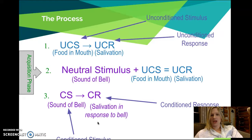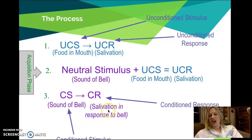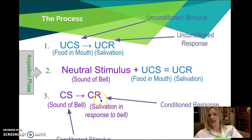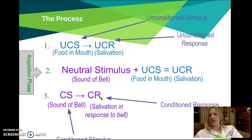A couple of things to keep in mind when working through your worksheet: the UCR and the CR are always going to be the same behavior. Whatever is the natural reaction to something else will become a learned reaction to the neutral stimulus you're introducing. Oftentimes it's easiest to start by identifying the CR, and you can backtrack from that to figure out what the UCR was. Whatever the CR is has to be something that at one time was elicited by something else naturally.